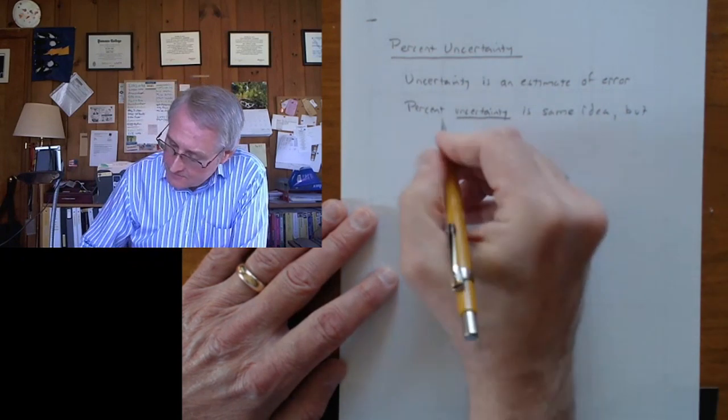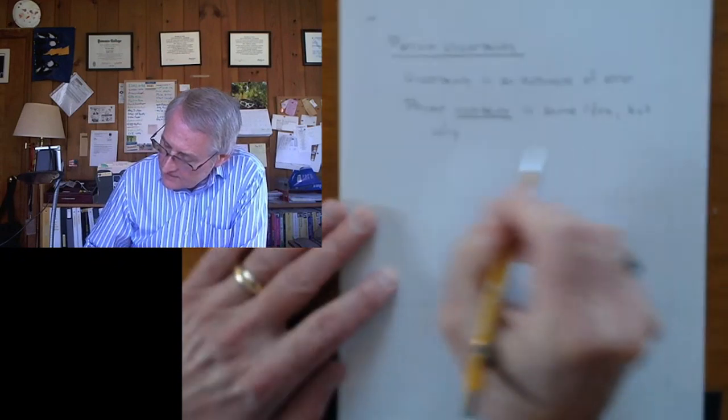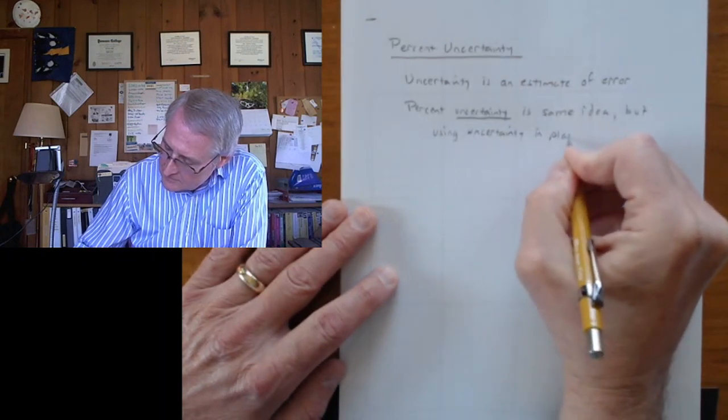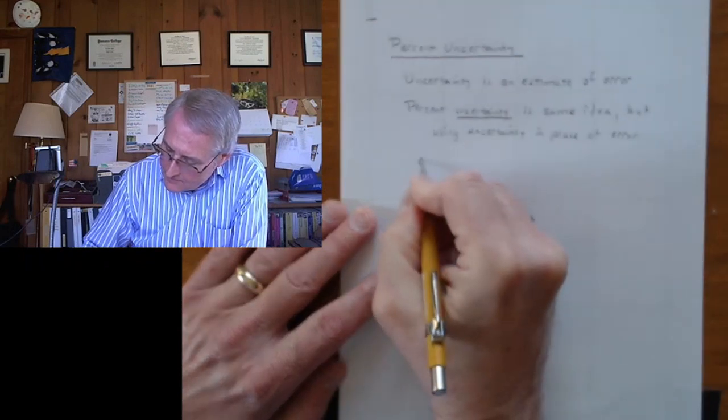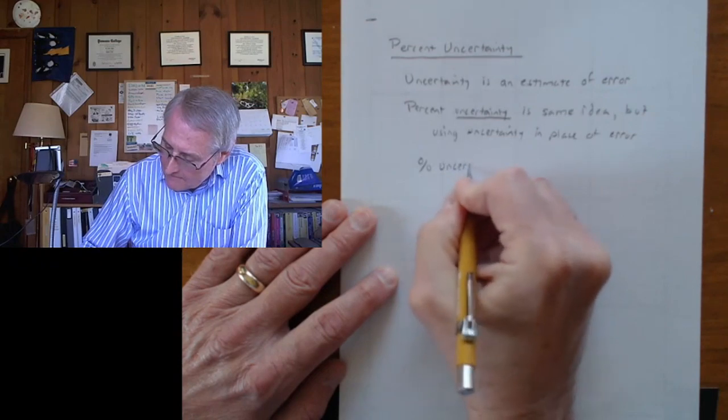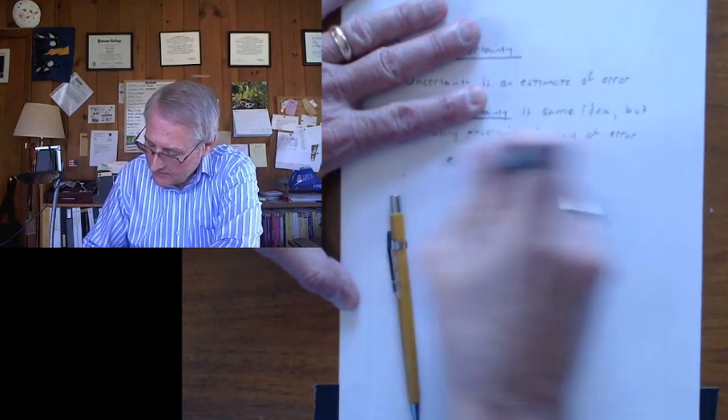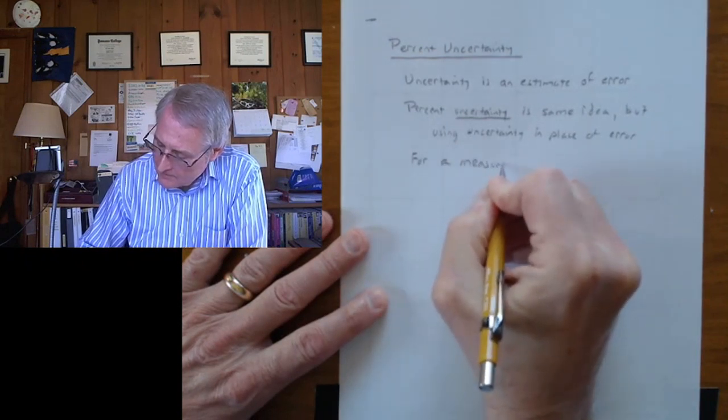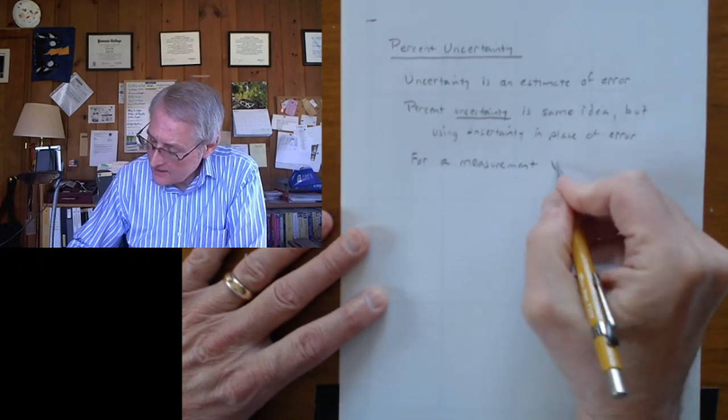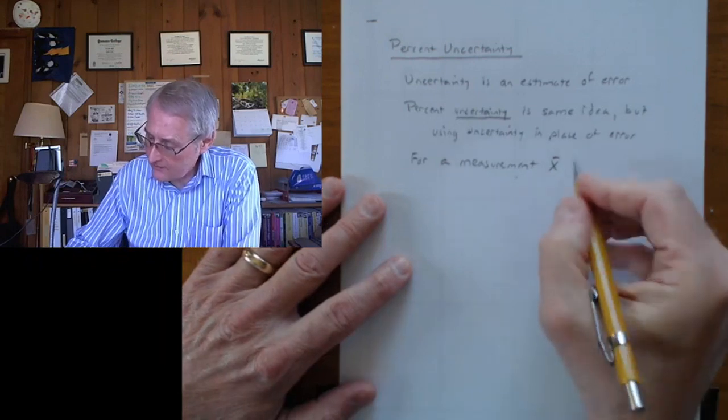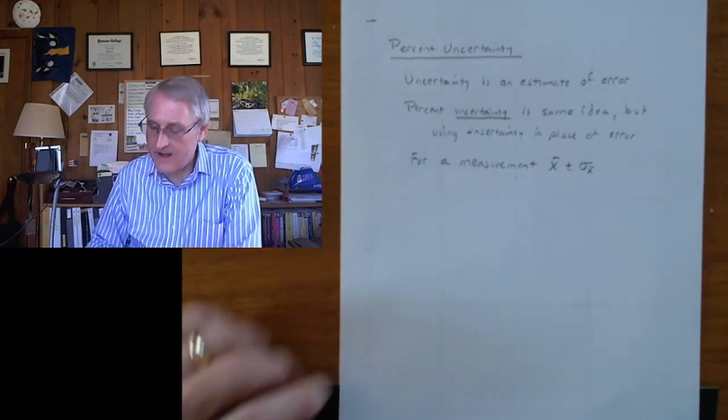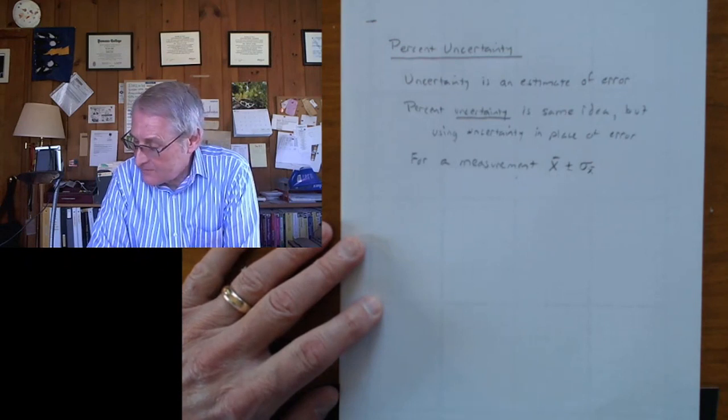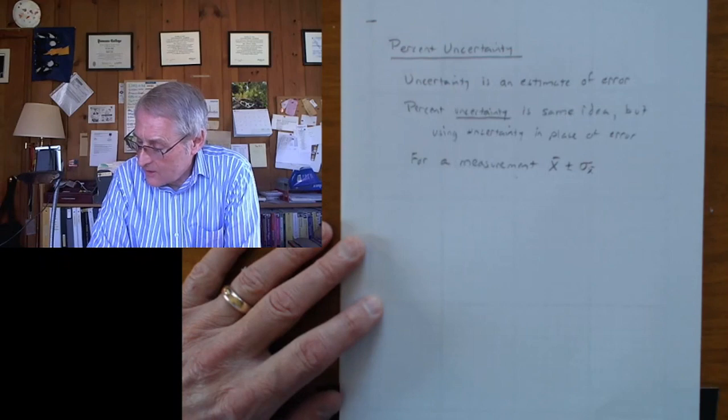What you do is you put the uncertainty in place of the error. So there's no symbol for it. Percent uncertainty. Wait, let me say, before I give you that, let's take a measurement. For a measurement, we think of it as a confidence interval, I'm going to call it x bar because maybe it's the average of several measurements, plus or minus the uncertainty, sigma x bar. That's the standard error, the standard deviation of the mean, the statistical uncertainty. The measure of how uncertain we are about that mean value.